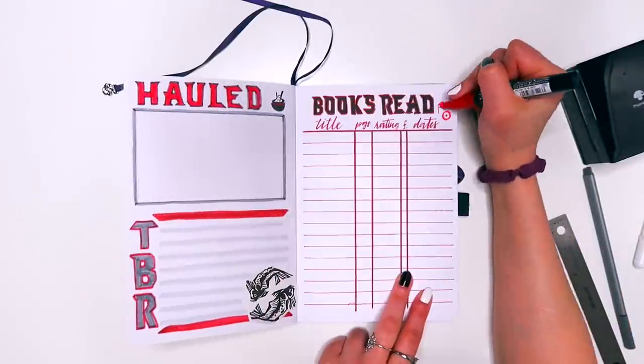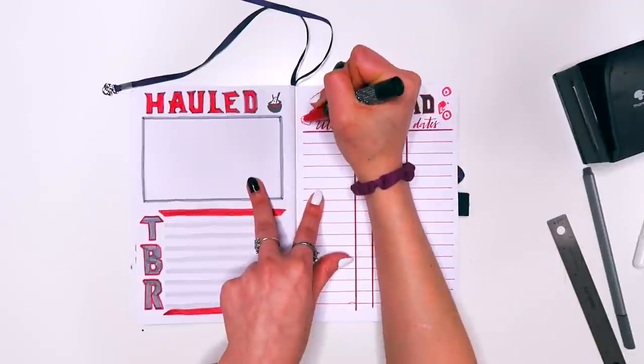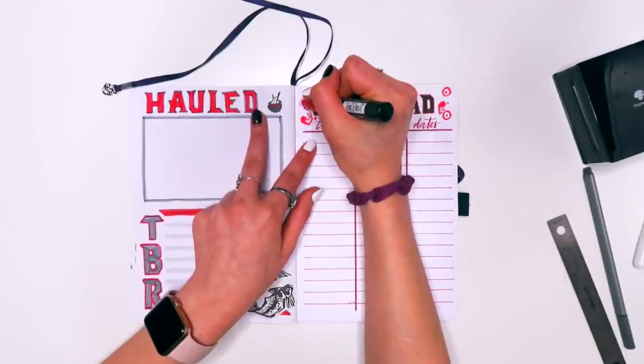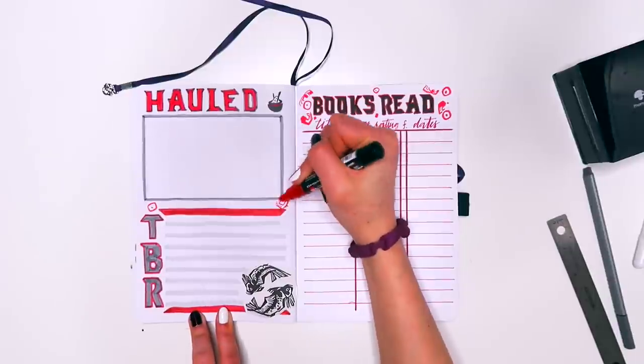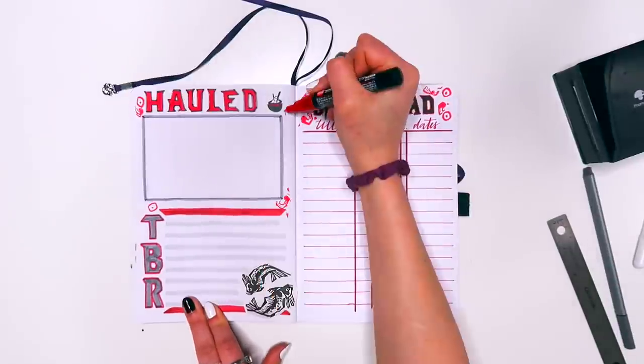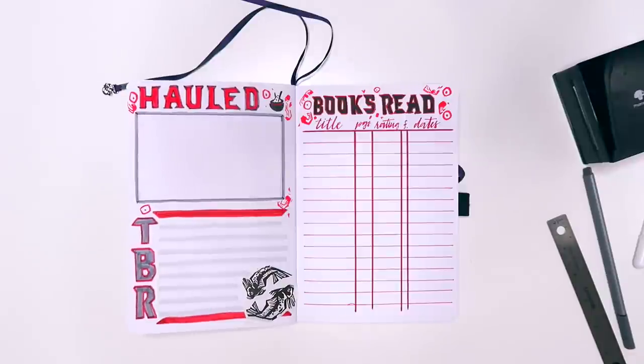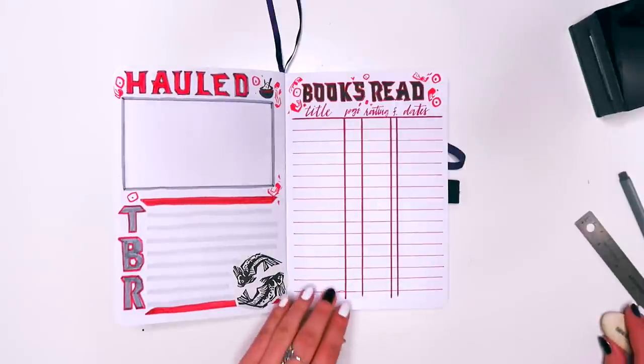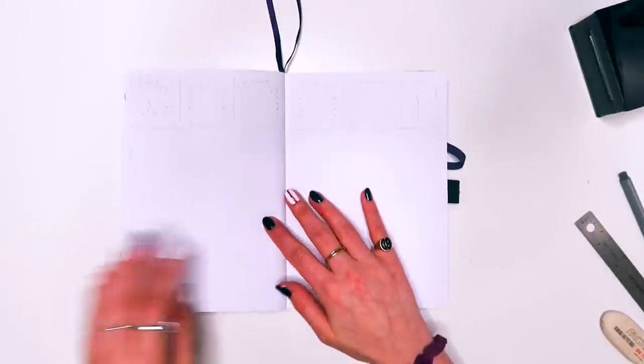And then once I finished that outline, I did go back and look at the inspiration picture that I was looking at to see if there was any other doodles that I could do around this page. And I just saw all these kind of fun squiggly circle lines in the background around the fish and added those in.